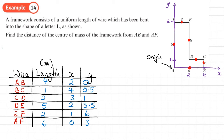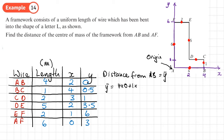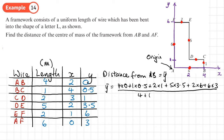To find the distance from AB, that's along the x-axis, so we're working out ȳ. ȳ equals the sum of each length times its y-coordinate divided by the total length: (4×0 + 1×0.5 + 2×1 + 5×3.5 + 2×6 + 6×3) divided by (4+1+2+5+2+6), which gives a value of 2.5. So the center of mass is 2.5 units from AB.